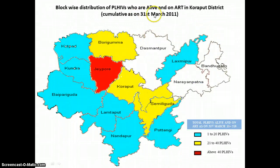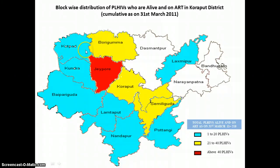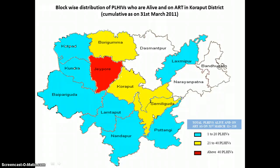This is PLHIVs who are alive and on ART. Jayapur, having had the maximum number of positives, having had ANC cases, also had the maximum number of pre-ART registration, and hence it also has the maximum number of people who are alive and on ART. This geographic belt — Koraput, Boriguma, Jayapur, Koraput, Indiguda — also has a national highway passing through, highways 43 and 401, which passes through all these areas. So we could possibly connect this to highway risk activities.